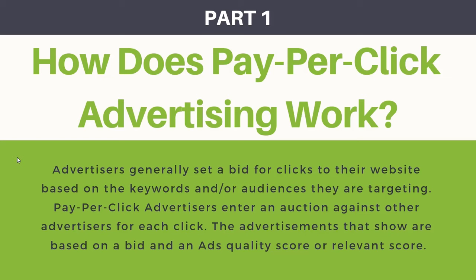How does pay-per-click advertising work? Generally, you set a bid for clicks to your website — you're either bidding on keywords or on audiences, setting a bid for how much you're willing to pay per click. Bids can really vary. For something like home decor, you might bid $1 to $2. For real estate, you might bid up to $5, $6, or $7. Some lawyers and insurance companies probably bid upwards of $20 to $30 per click, and some top bids go above $50.